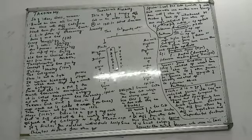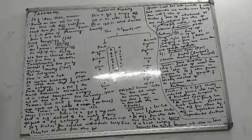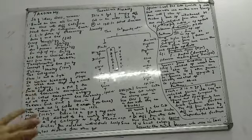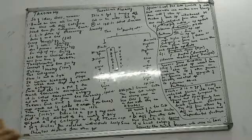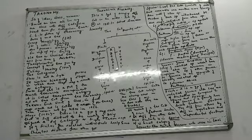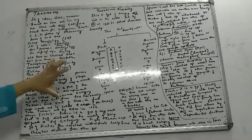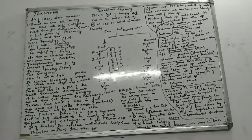Hierarchy means arranging something in ascending or descending order. For example, in a school: director, principal, vice-principal, coordinators, teachers, monitors, students, office staff — this is all hierarchy. So taxonomy involves a hierarchy of steps.